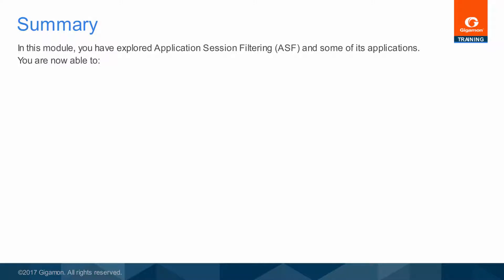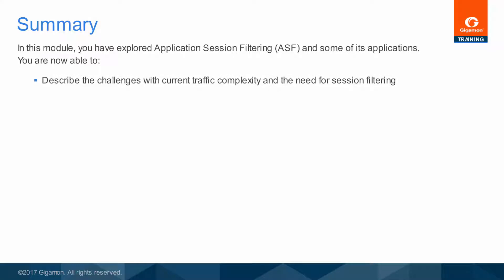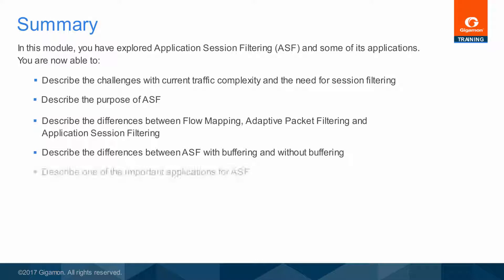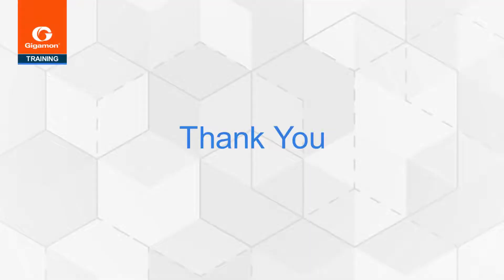You are now able to describe the challenges with current traffic complexity and the need for session filtering; describe the purpose of ASF; describe the differences between flow mapping, adaptive packet filtering, and application session filtering; describe the differences between ASF with buffering and without buffering; and describe one of the important applications for ASF. This completes the GigaSmart Application Session Filtering use case module. Thank you.